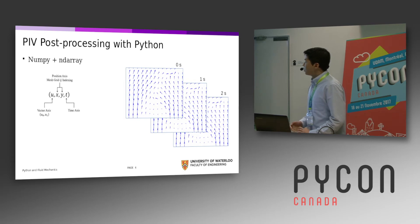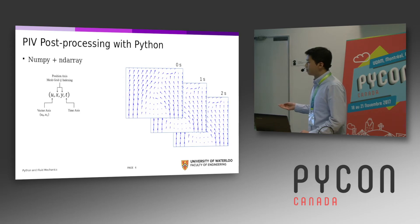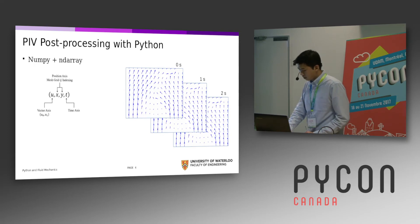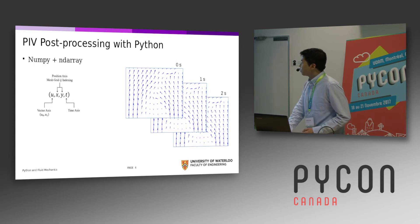What you can do is set up a NumPy array where each spatial dimension or each time dimension corresponds to one dimension in the array, and then you have one last dimension which represents the different velocity vector components. That's really great — you can use NumPy to directly compute different quantities on these vector fields.